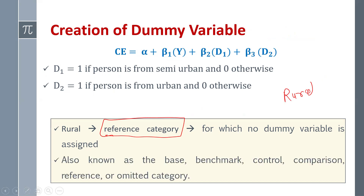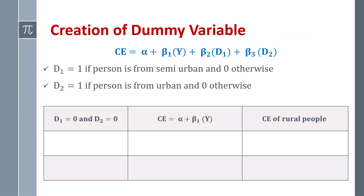The rural category is also known as the base, benchmark, control, comparison, reference, or omitted category. When D1 and D2 are both equal to 0, substituting those values gives consumption expenditure equals alpha plus beta 1 times Y — that shows the consumption expenditure of rural people.